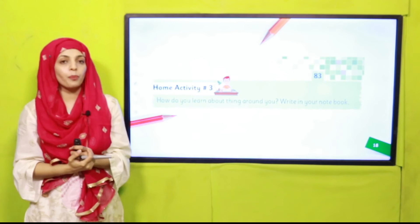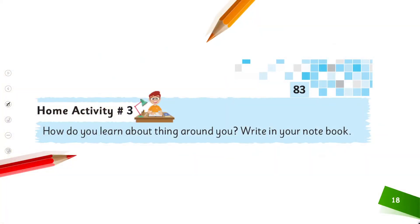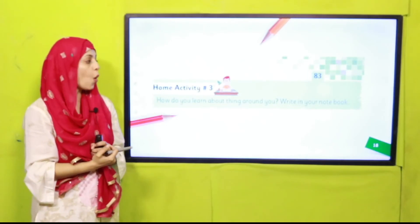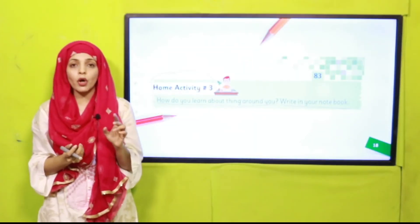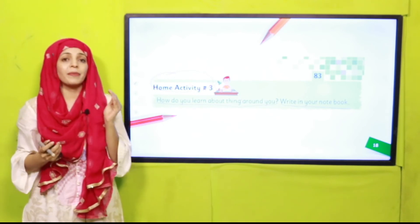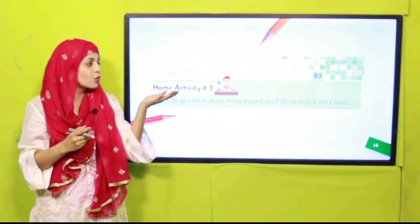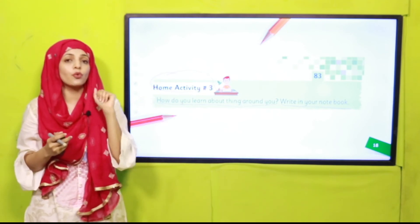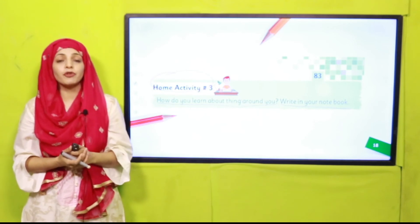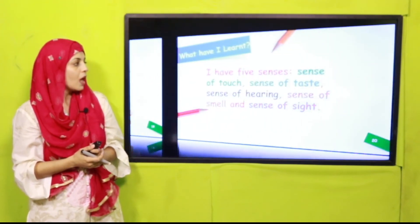Please pause the video and open page number 83 in your books. There is a home activity number three given on this page. 'How do you learn about things around you? Write in your notebook.' This is your homework. You will do it at home and write the names of your five senses in your notebook, because your senses tell you about the things around you. Write the names of all five senses in your notebook and finish it at home.